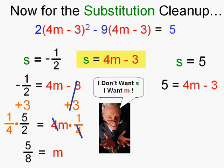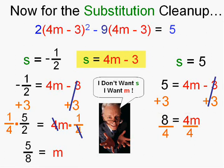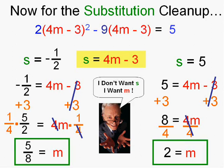On the other side, a little bit easier if I put a five in for s. All I have to do is add three to both sides and then divide by four and m will be two. And that's about as hard as it gets. That involved everything. So you have two answers: five-eighths and two. That was a tough one, wasn't it?